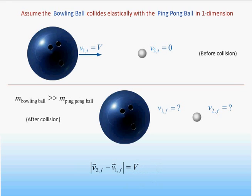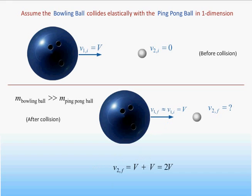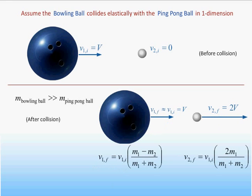Since the bowling ball is much heavier than the ping-pong ball, we expect its velocity will not change much during the collision. Therefore we expect the final speed of the ping-pong ball to be about twice the initial speed of the bowling ball. As a check, we can look at the exact solution which we obtained last time and we see that in the limit that m1 is much greater than m2, we recover our approximate solution — that the speed of the ping-pong ball after the collision is about twice the speed of the bowling ball.